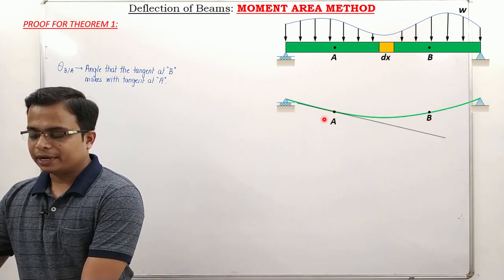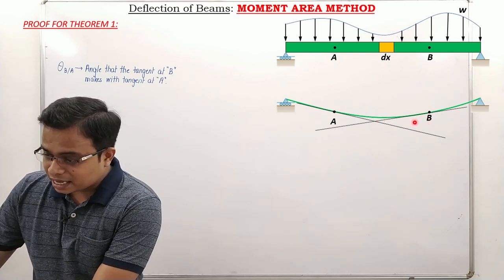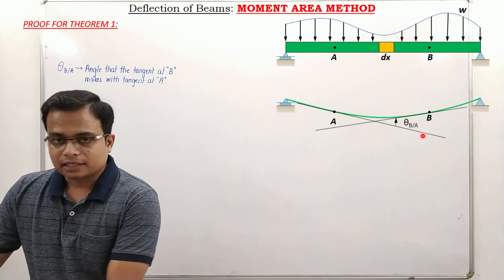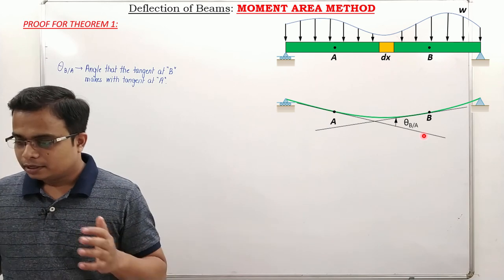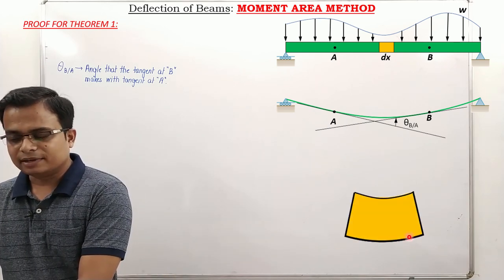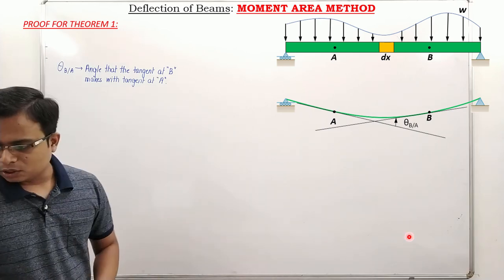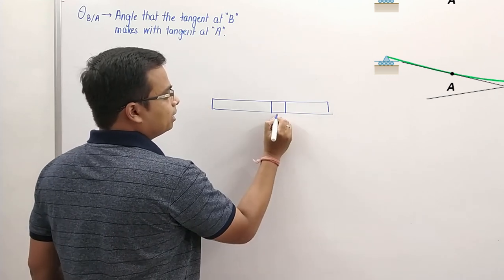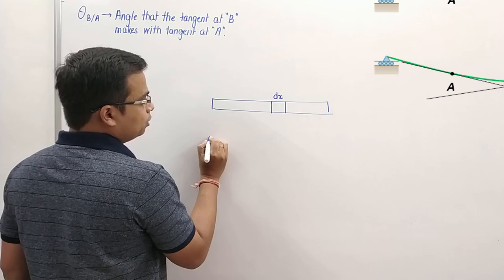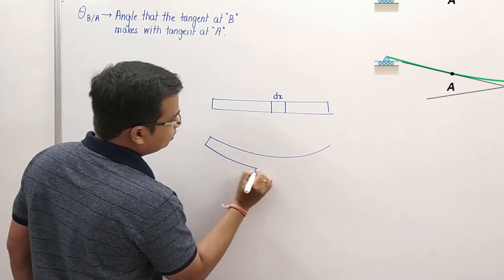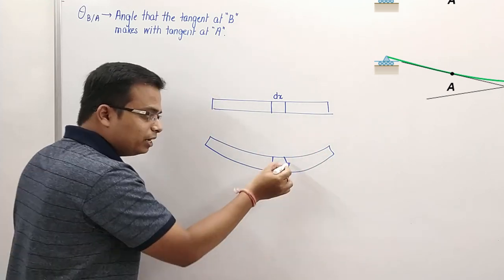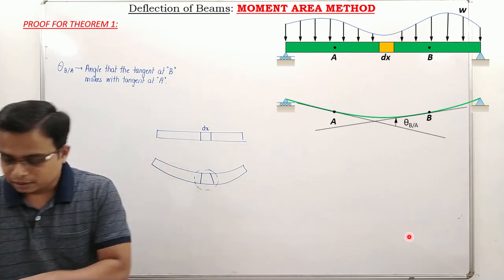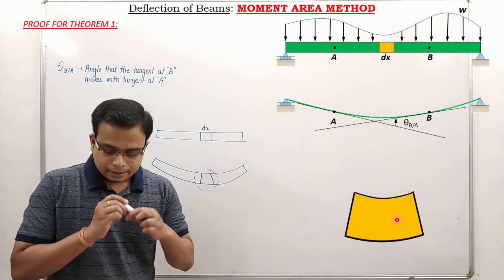We've got point A and point B. Make a tangent from A and a tangent from B. This angle is theta_B_to_A — the angle the tangent at B makes with respect to the tangent at A. Now, consider a very small element of length dx somewhere between A and B. The beam bends, so this element also bends. When you zoom into this element, you can observe its shape — a small portion of the elastic curve.